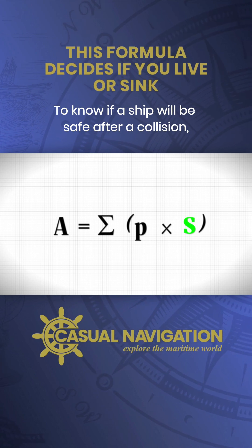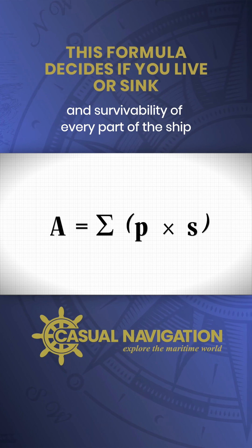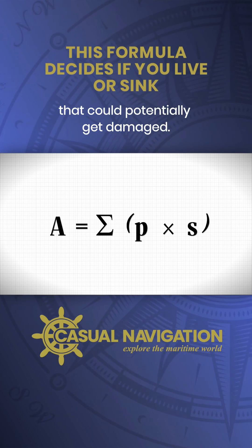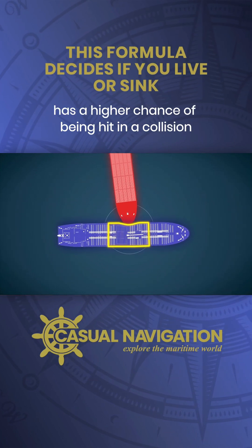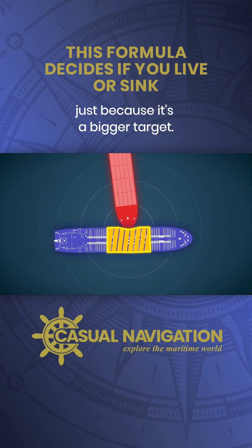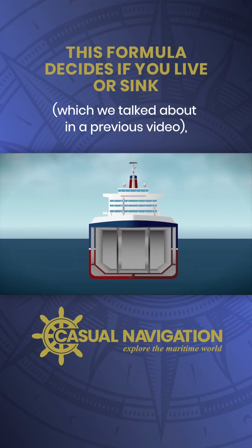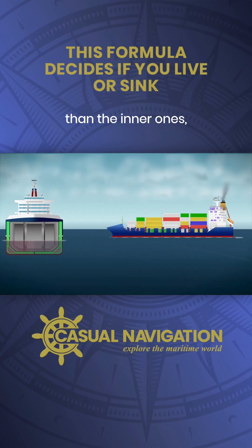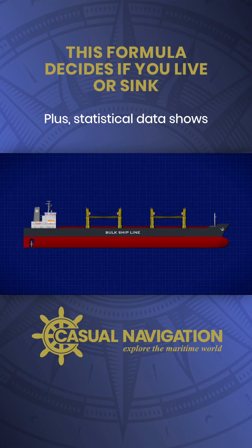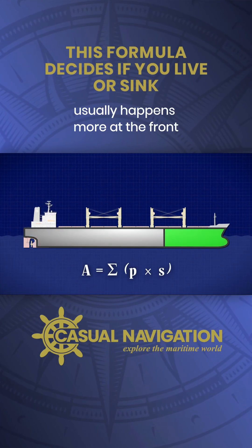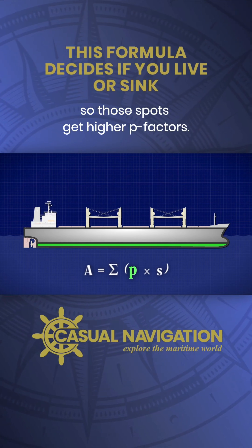To know if a ship will be safe after a collision, we need to work out the probability and survivability of every part of the ship that could potentially get damaged. For instance, a longer compartment has a higher chance of being hit in a collision just because it's a bigger target. On ships with double hulls, the outer compartments are more exposed than the inner ones, making them more likely to get hit. Plus, statistical data shows that damage from collisions usually happens more at the front and bottom of the ship, so those spots get higher P factors.